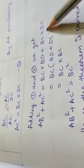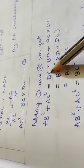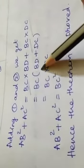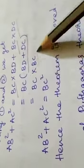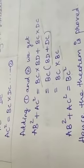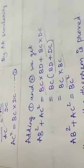Adding equations 1 and 2: AB squared plus AC squared equals BC times BD plus BC times DC. Taking BC as common factor gives BC times (BD plus DC). From the diagram, BD plus DC equals BC. So we get BC times BC, which is BC squared. Hence the theorem is proved: AB squared plus AC squared equals BC squared.